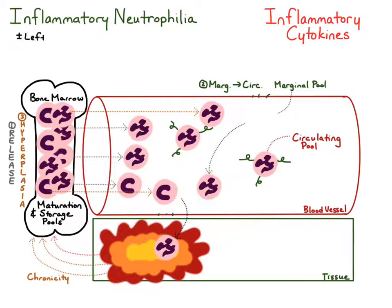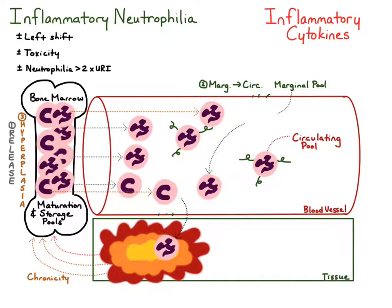Things we look for to identify an inflammatory neutrophilia include a left shift — usually present, but sometimes not — as well as toxic neutrophils. We also look for a moderate to marked neutrophilia. An inflammatory neutrophilia can be mild, but if the neutrophilia exceeds greater than two times the upper reference interval, that's more specific for inflammation as the cause compared to a stress or excitement neutrophilia.